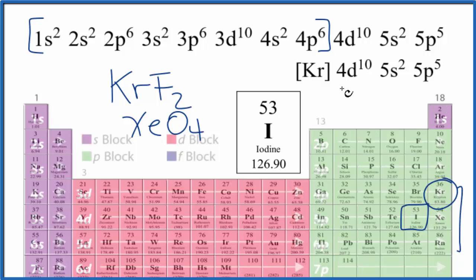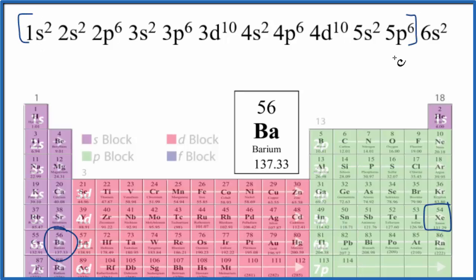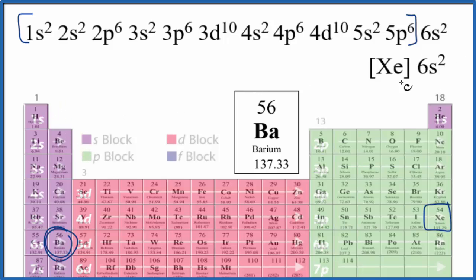One last one: write the condensed electron configuration for barium. Barium is right here on the periodic table. We find the noble gas before barium — at 56, we go back to 54, which is xenon. We count up to 54 electrons. The condensed electron configuration for barium looks like [Xe] 6s2. We have two valence electrons in 6s2 — going down to the sixth energy level — and barium is in group two, so it makes sense it should have two valence electrons.